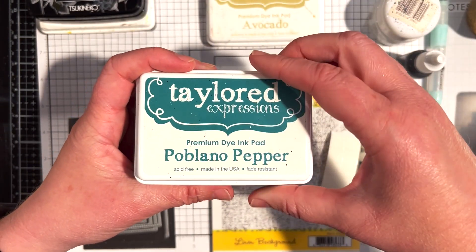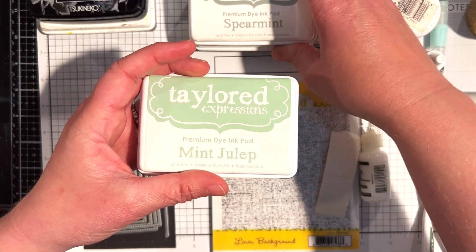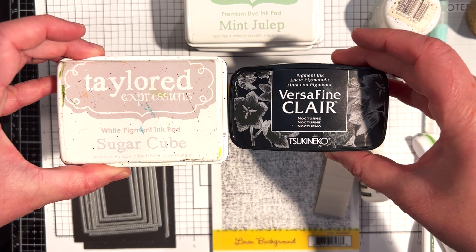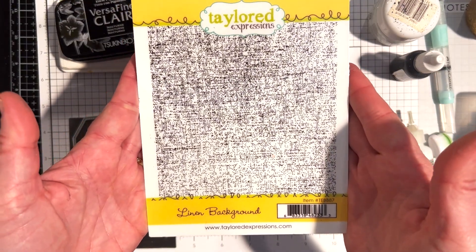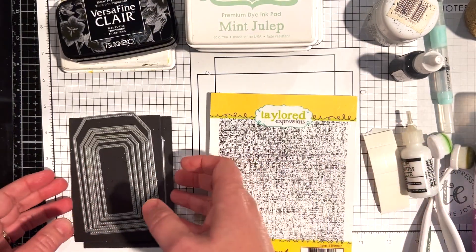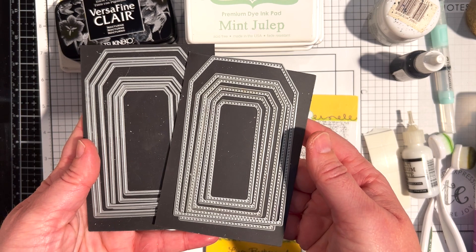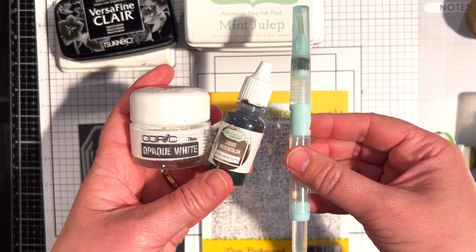For ink colors I have avocado, poblano pepper, spearmint, and mint julep. I'll also be using sugar cube ink and versafine clair in nocturne. I'll be using the linen background stamp, the tag stacklets 2 and pierced tag stacklets 2 die collections. For adhesives I have foam squares and multi-medium matte, and for adding splatters I have copic opaque white ink, chocolate truffle liquid watercolor, and a water brush.